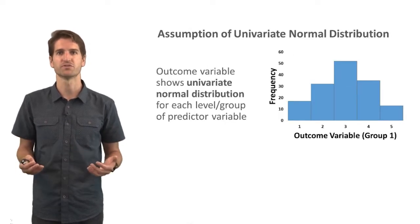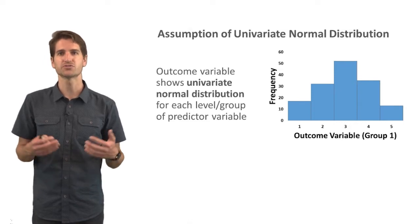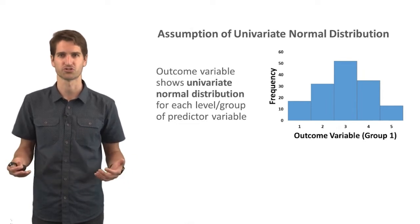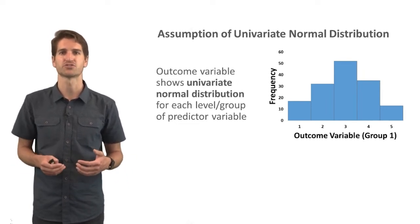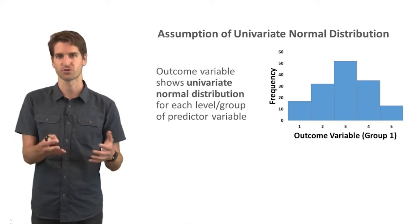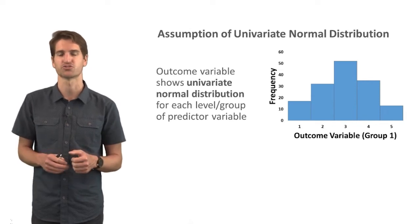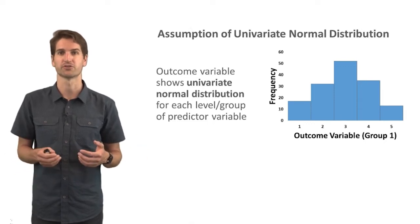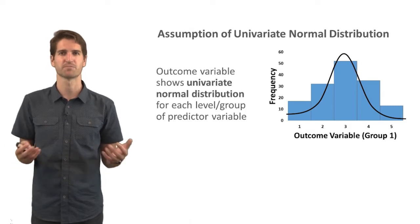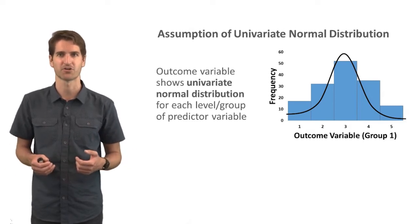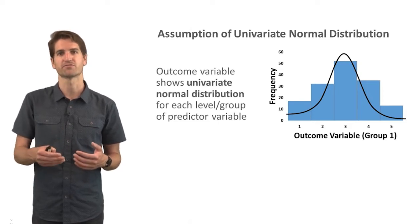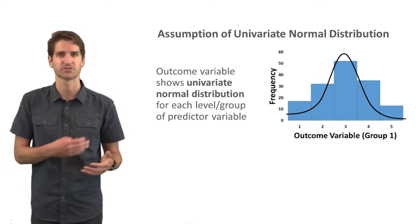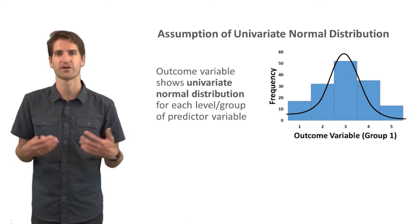We can use a histogram to visualize whether a distribution has that univariate normal distribution. For example, if the distribution of scores for one group shows a nice bell-shaped curve as represented by the histogram, that assumption is met. We'd want to confirm this for each group — group one, two, three, or however many groups we have. There are also statistical tests we can use to assess whether those distributions approximate a normal distribution.